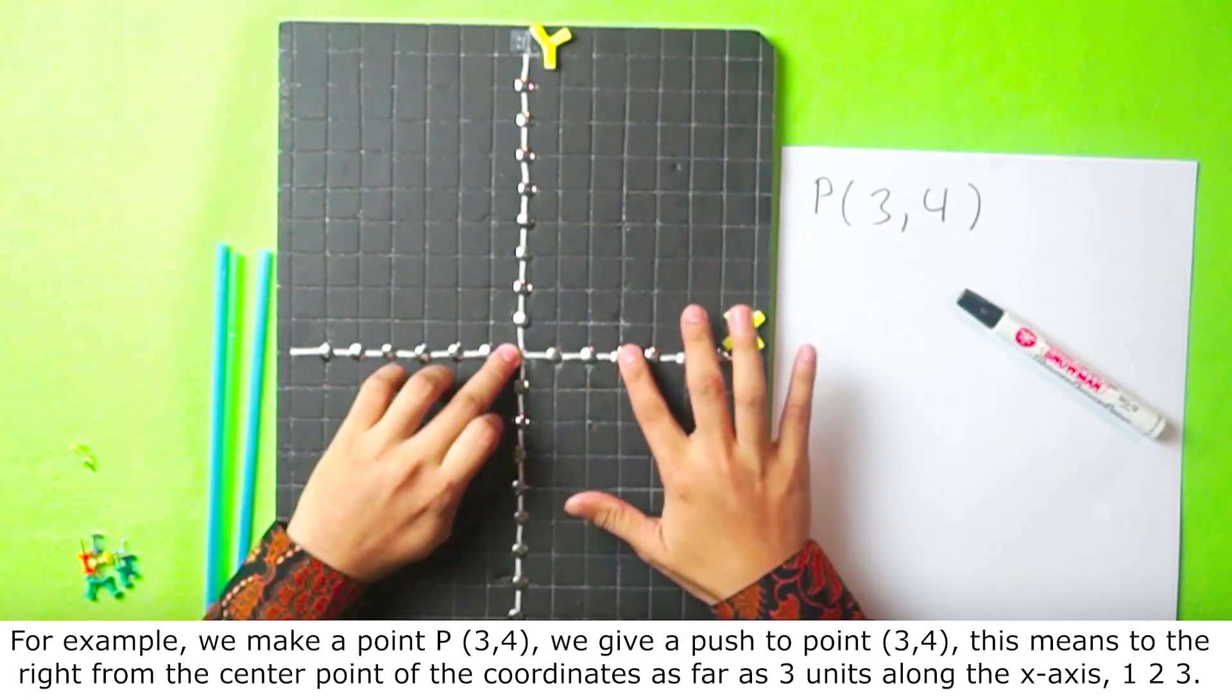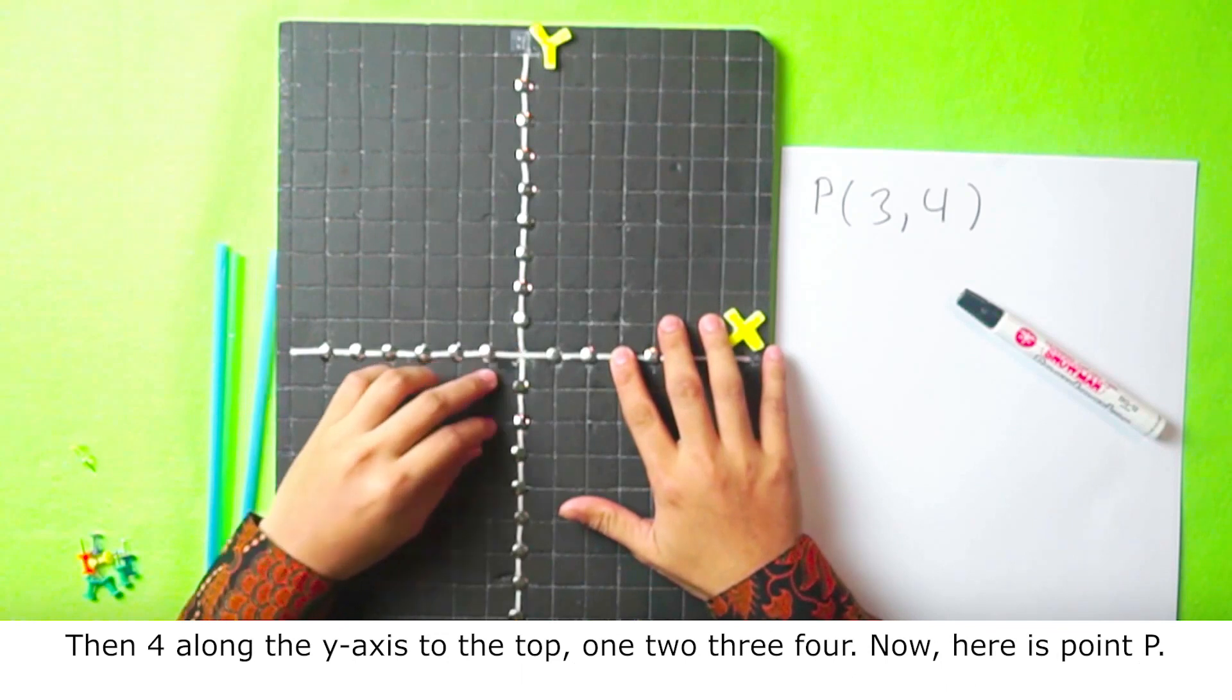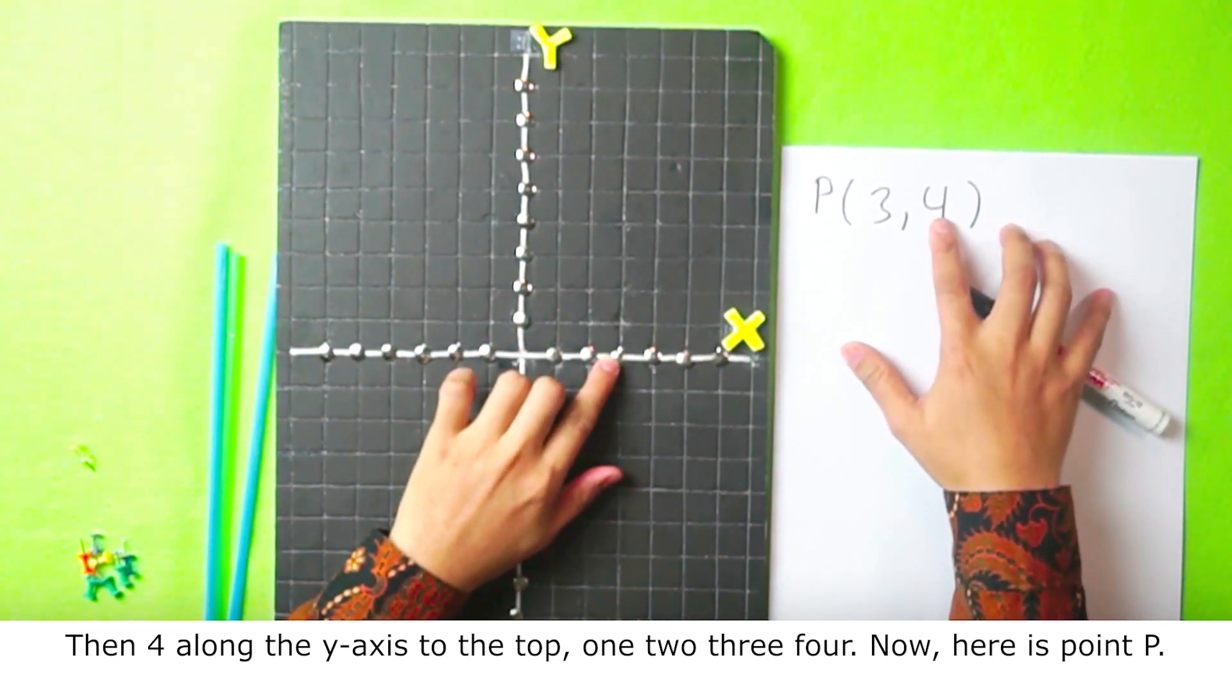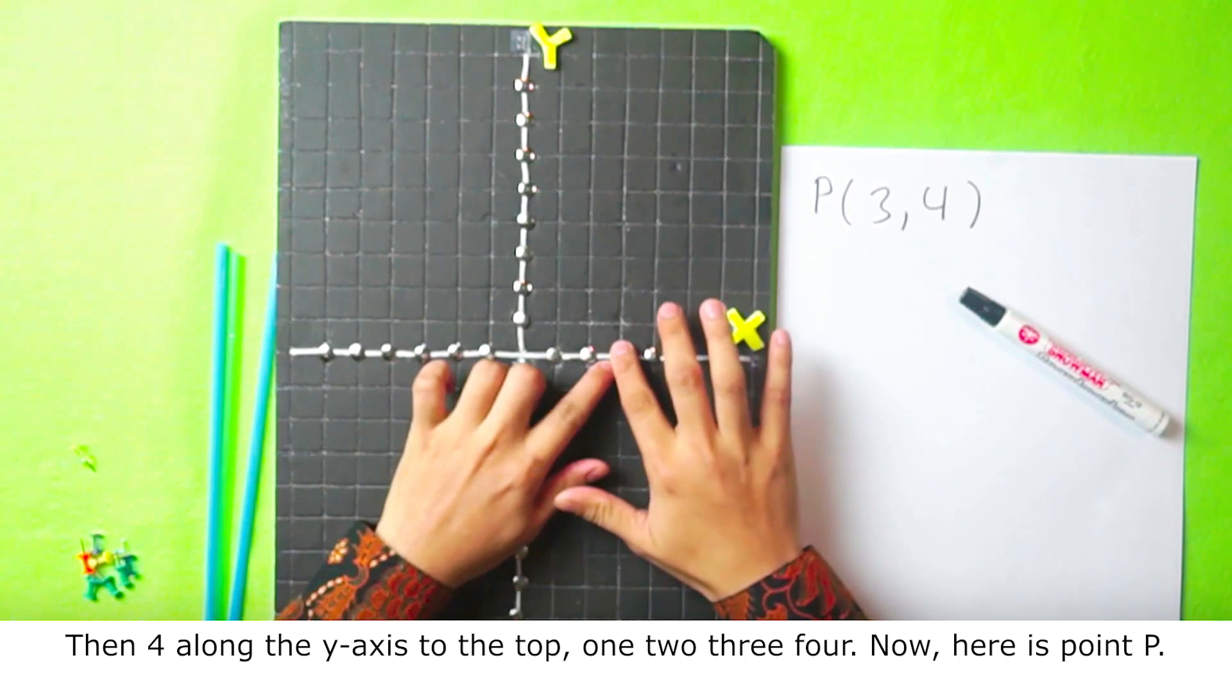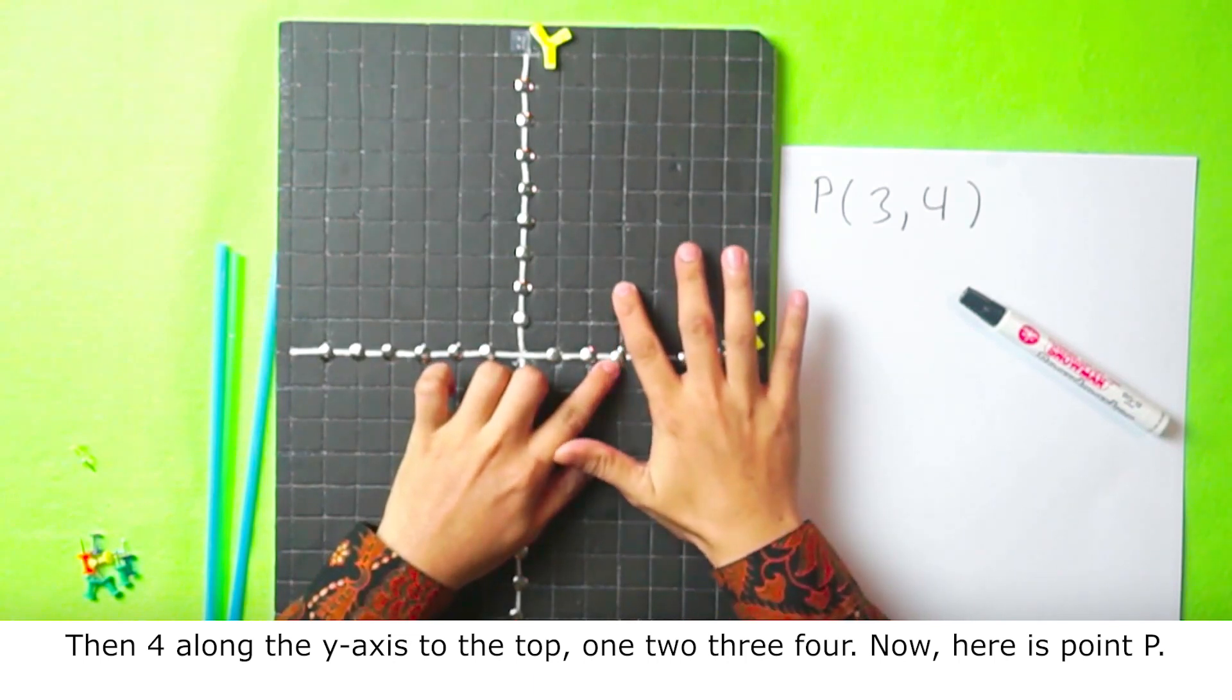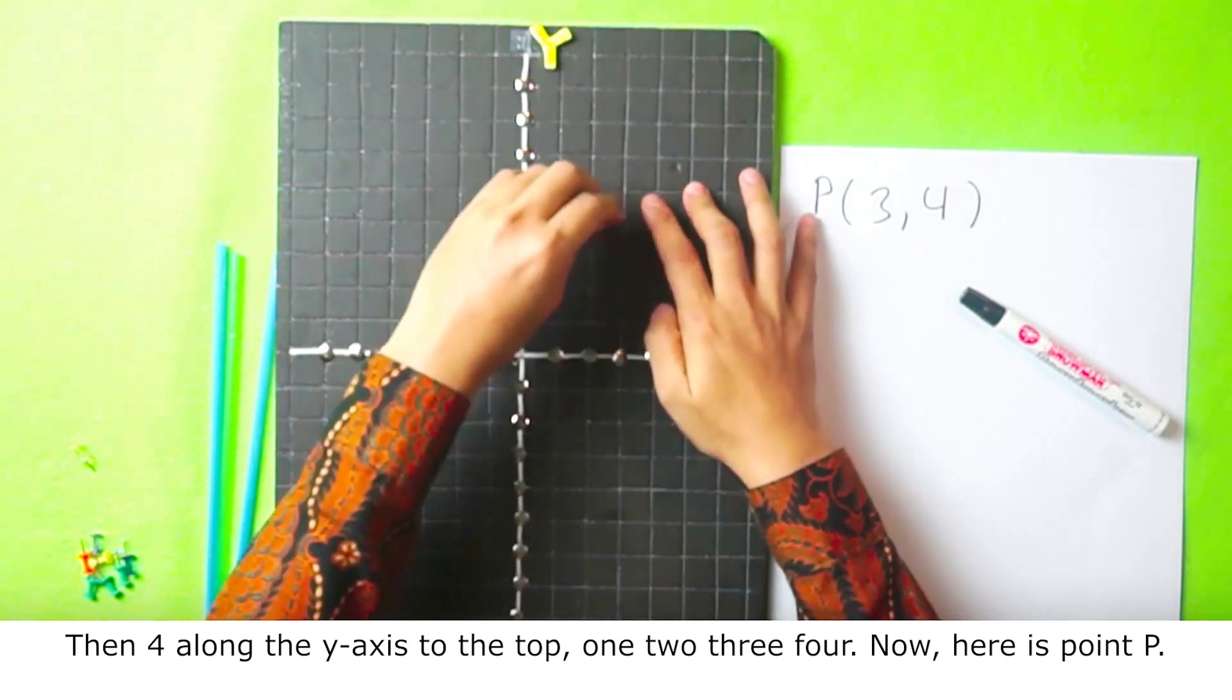1, 2, 3. Then 4 along the y axis to the top. 1, 2, 3, 4. Now here is point P.